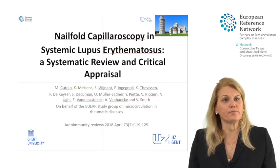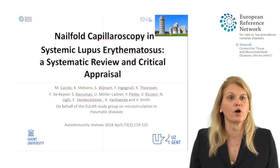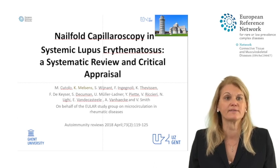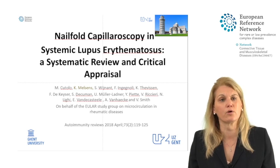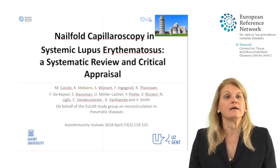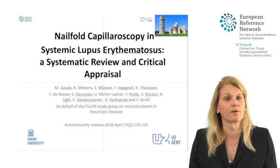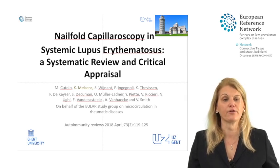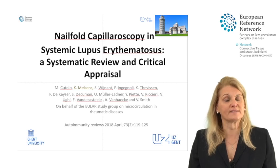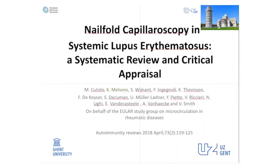Let us move to lupus and capillaroscopy. In this systematic review published in Autoimmunity Reviews, using the standard description of the EULAR study group on microcirculation and rheumatic diseases and applying the standard table we saw earlier, the following could be concluded. First, in lupus, all studies retained in this systematic review showed conclusive data that more abnormal shapes are present in a lupus population than in a healthy population — so the prevalence of abnormal shapes is higher in lupus. Secondly, concerning clinical applications, it has been conclusively shown that disease activity is associated with capillaroscopy findings.